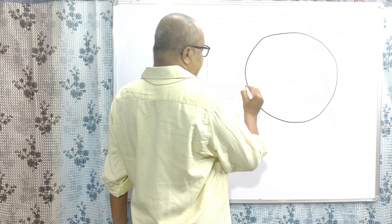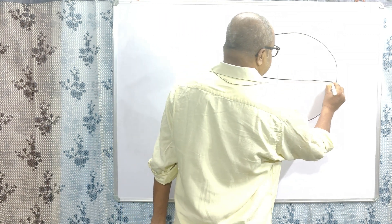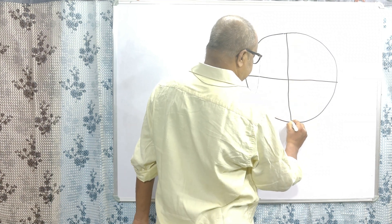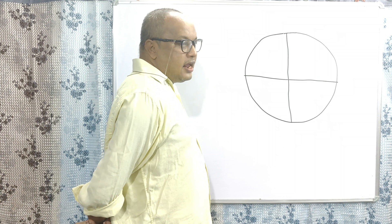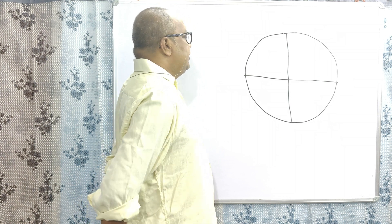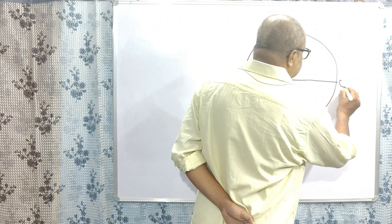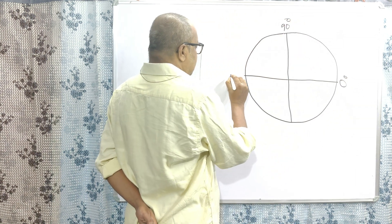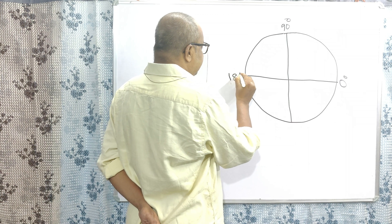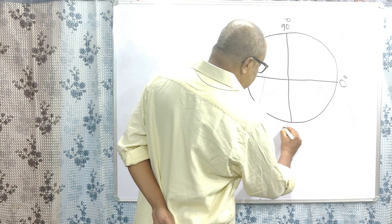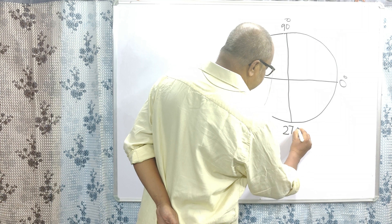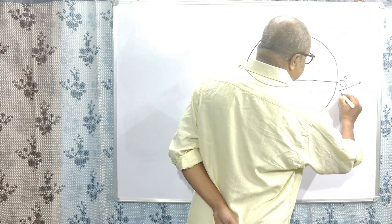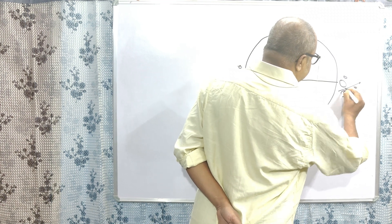This circle is divided into four parts. Each part has 90 degrees. So this is 0 degrees, this is 90 degrees, this is 180 degrees, this is 270 degrees, and this is 0 degrees or 360 degrees.